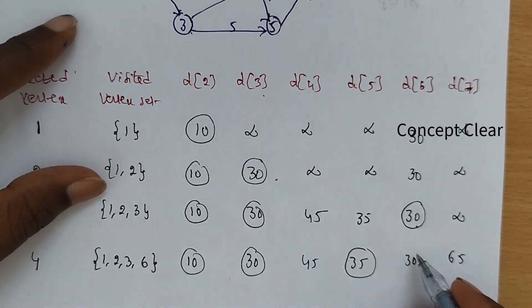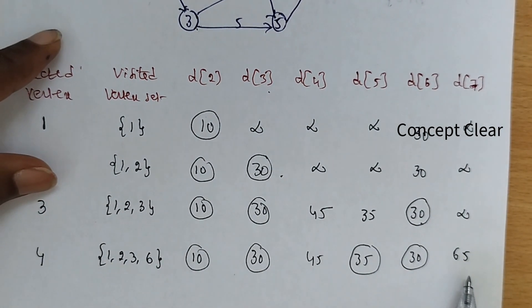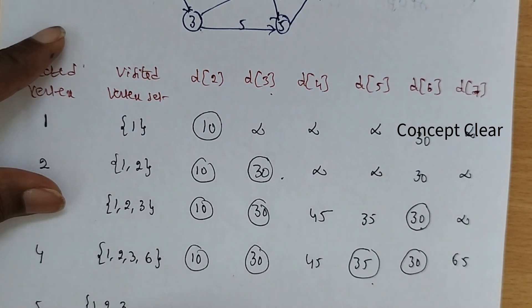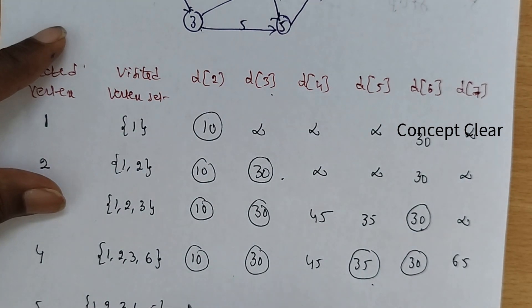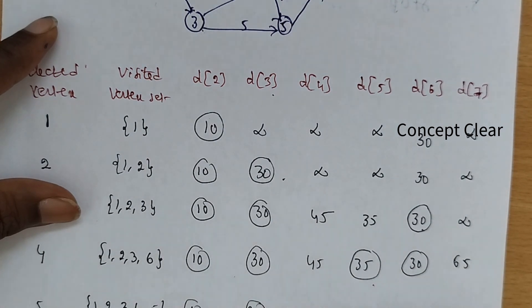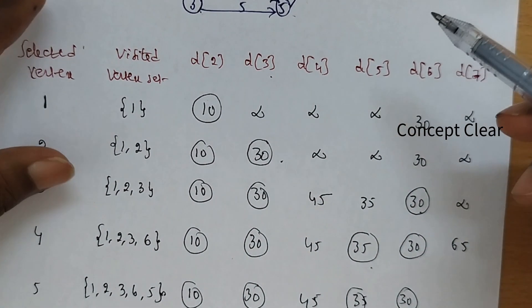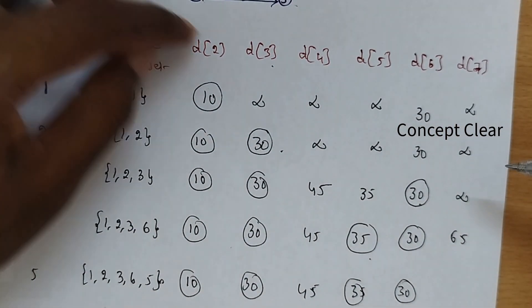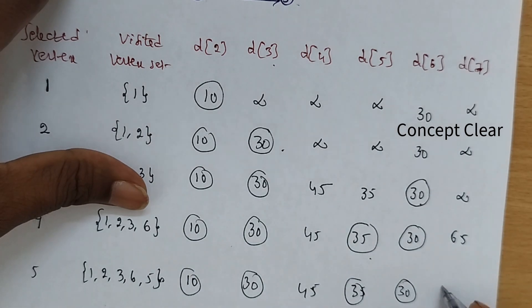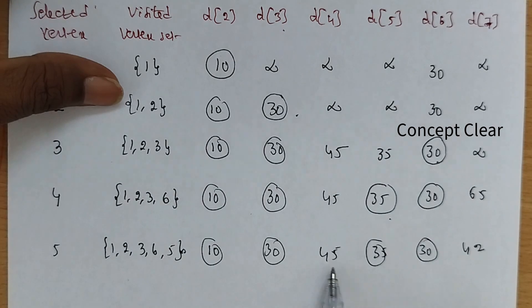Among all remaining values, which is the least? The next selected is vertex 5. Visited: 1, 2, 3, 6, 5. Values so far: 10, 30, 45, 35, 30. From vertex 5 to vertex 7, the cost is 7. So cost from 1 to 7 via this path: 10 plus 20 plus 5 plus 7 equals 42. Comparing 65 and 42, the minimum is 42, so we update the value to 42.